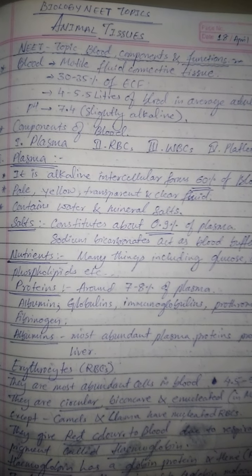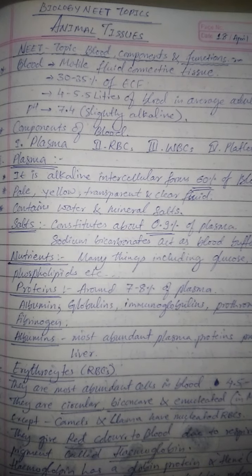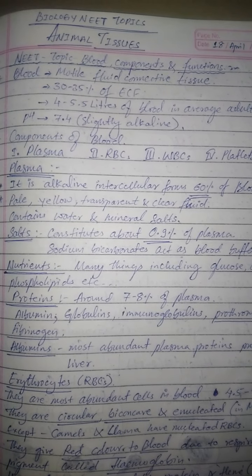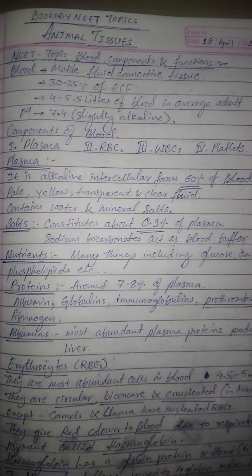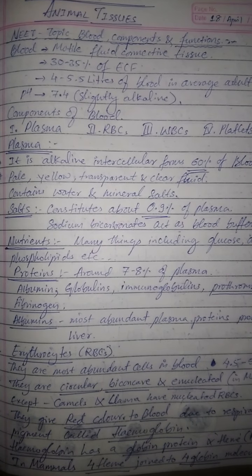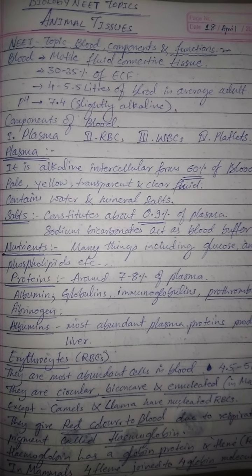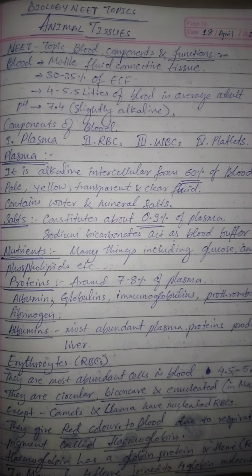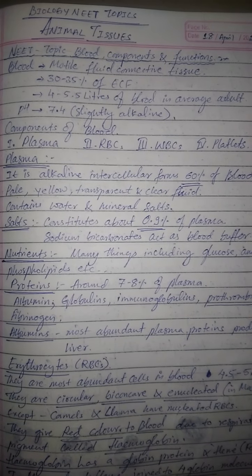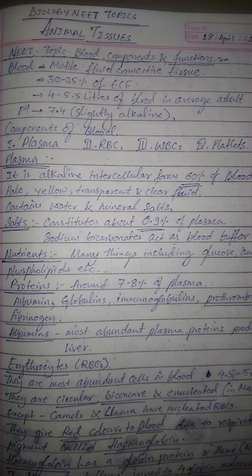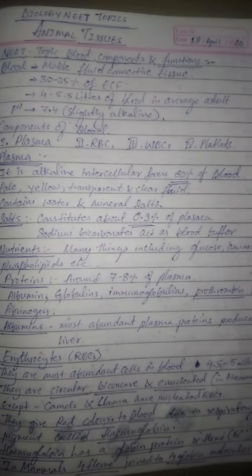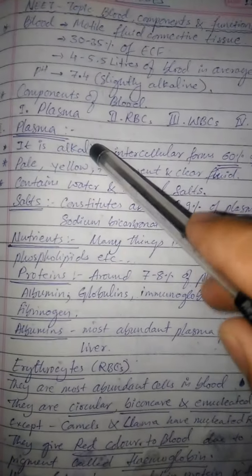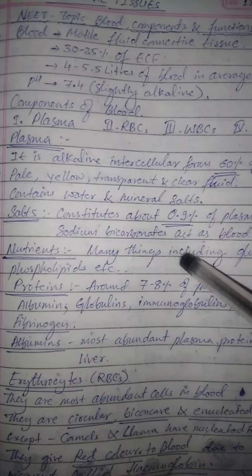The points highlighted with an underline can be considered important for your NEET exam. There are four important components of blood: plasma, RBC, WBC, and platelets. RBC is also called erythrocytes, WBC is also called leukocytes, and platelets are also called thrombocytes. We will start with the first component, plasma.